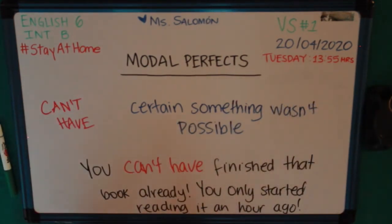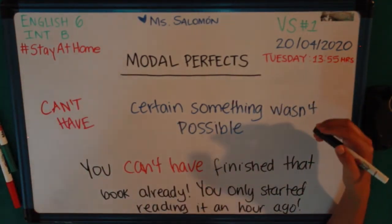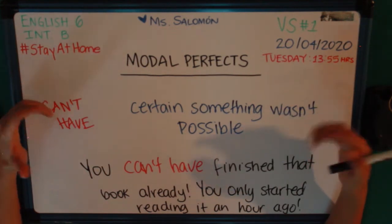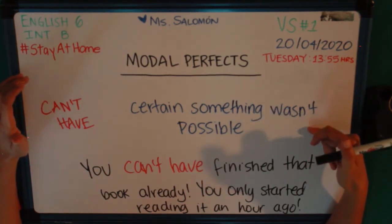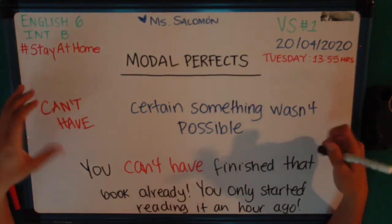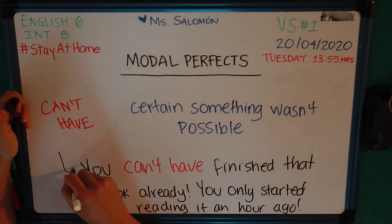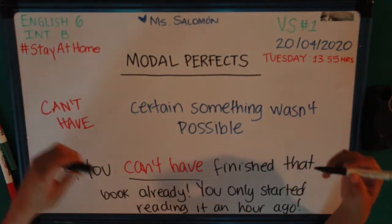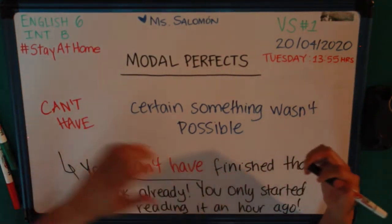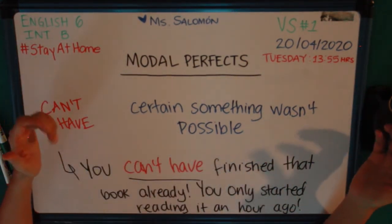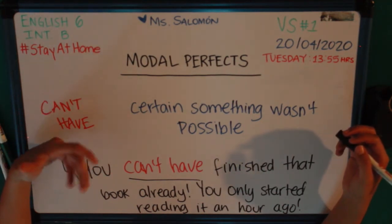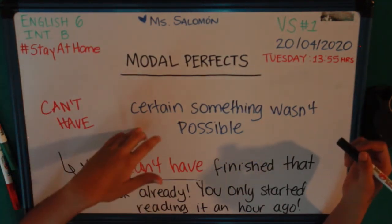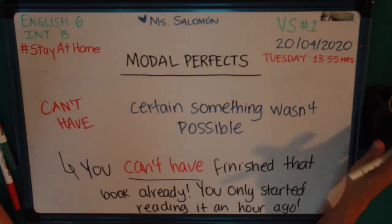Now let's talk about 'can't have.' We use 'can't have' to express that we are certain, or that we know for sure, that something wasn't possible. For example, we could say 'You can't have finished that book already — you only started reading it an hour ago.' What we're saying is that we can't believe, or we are sure, that that person didn't finish the book. We are certain that something wasn't possible.